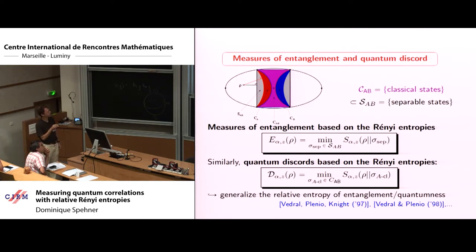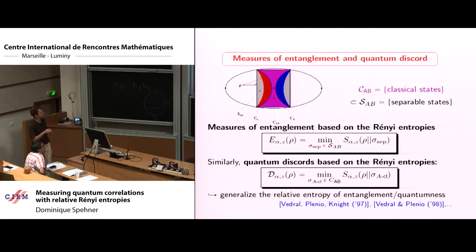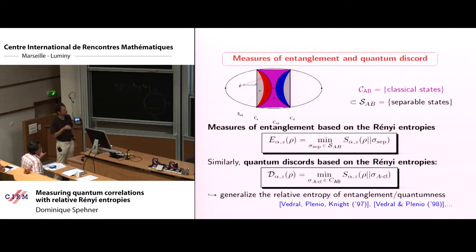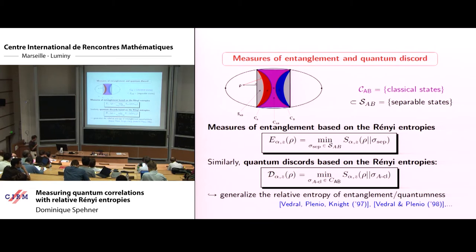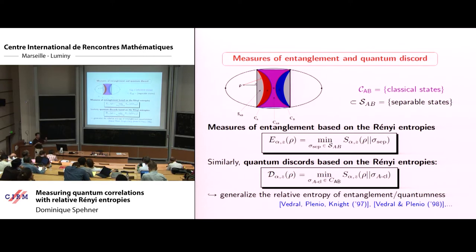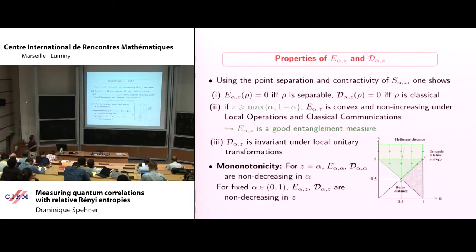Now I want to use the generalized Rényi relative entropy. I would like to show that this gives very specific results by generalizing previous results. What are the properties of this measure? First, because the relative entropy satisfies separation of points — it is zero if and only if the states are equal — this implies the entanglement measure is zero if and only if rho is separable, and the discord is zero if and only if rho is classical.